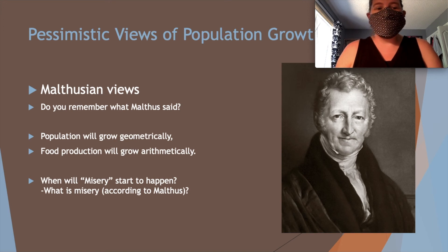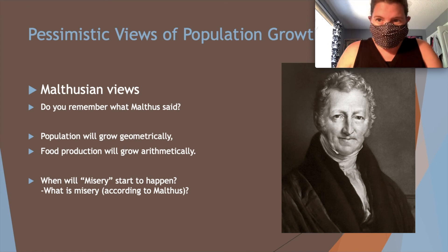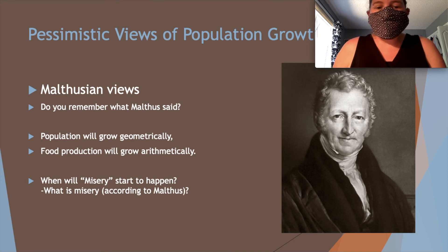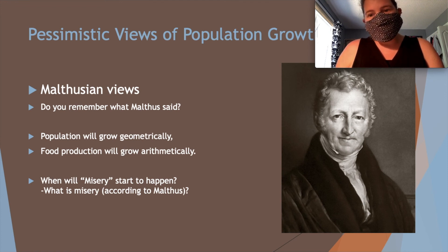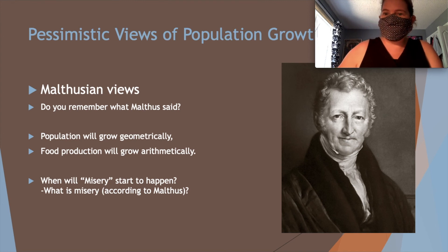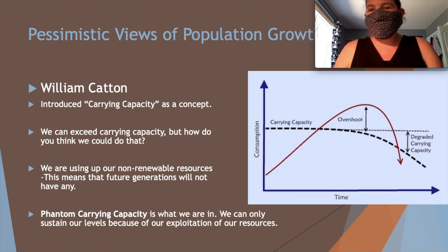On the pessimistic side are the Malthusian views. The idea behind Malthusian views is that population grows geometrically while food production grows arithmetically. The Malthusian view holds that we cannot support any more people, and we are perhaps due for something catastrophic — which, ironically, may be happening at the moment.